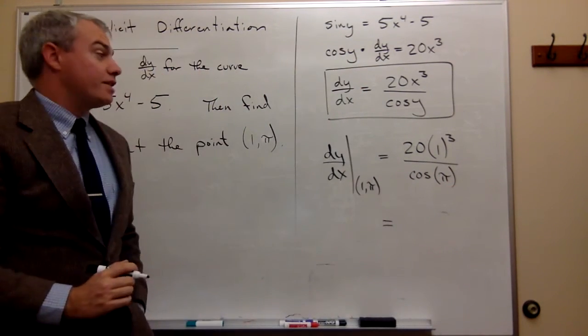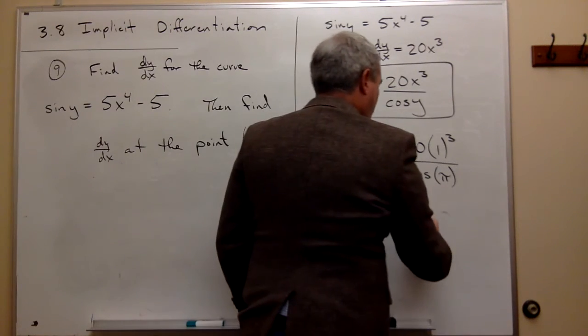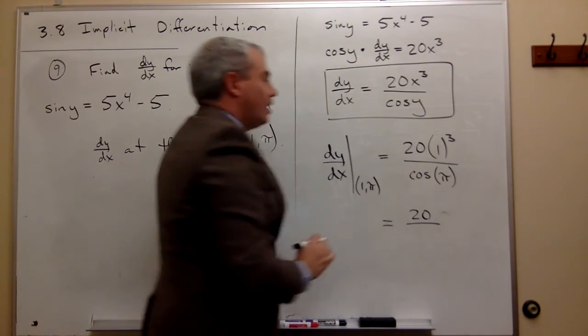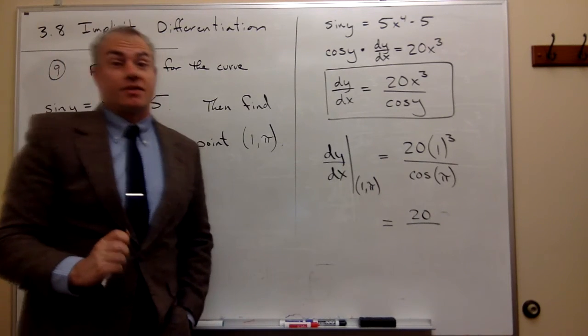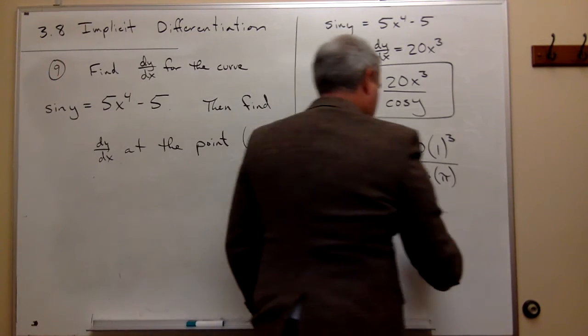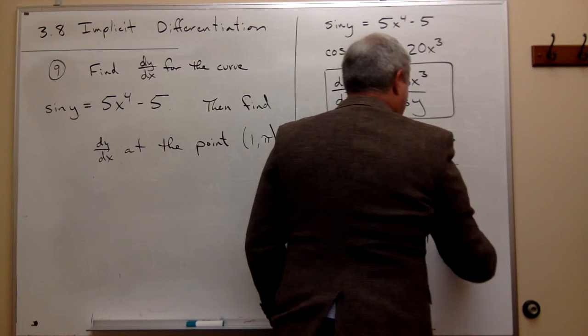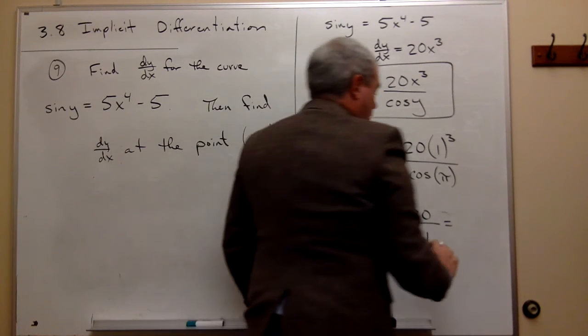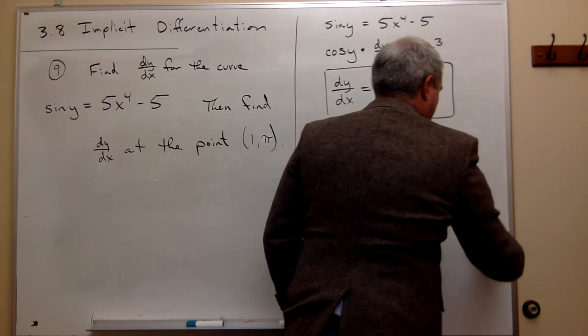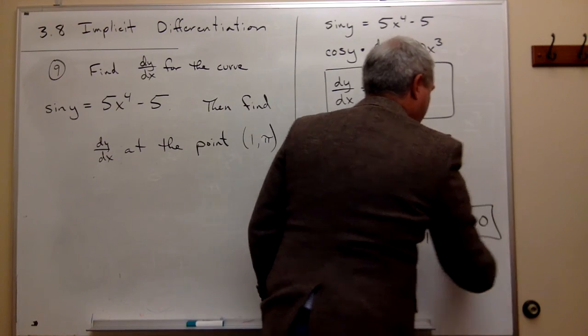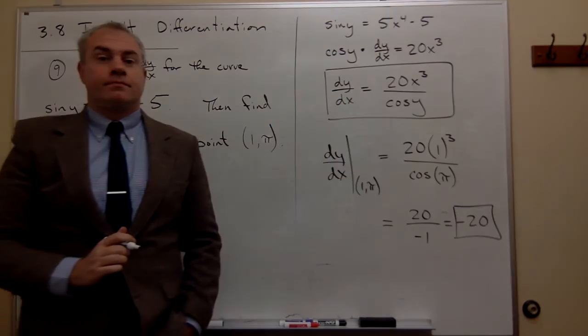Now 20 times 1 cubed is 20, and cosine of π is negative 1. So we get 20 divided by negative 1, or in other words, negative 20 for my slope. So here's the derivative.